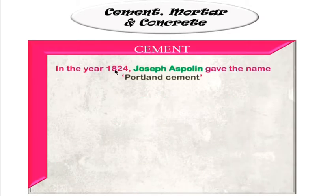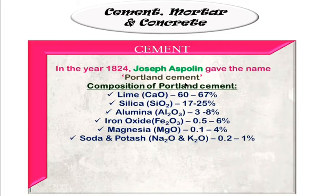In the year 1824, Joseph Asperlin gave the name Portland cement, which is the most common cement we use to build our homes and is considered to be ordinary cement. The composition of this cement includes lime at 60 to 67 percent.